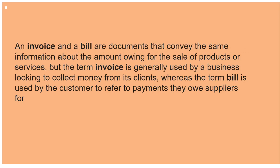Next is invoice and bill. An invoice and a bill are documents that convey the same information about the amount owing for the sale of a product or services. However, the term invoice is generally used by a business looking to collect money from its client, while bill is used by a customer to refer to the payment they owe suppliers. It is prepared by the seller of the goods when selling on credit — it contains name of the buyer, details of goods sold, rate, and amount of sales. The original copy of the sale invoice is sent to the buyer, while the duplicate copy is retained by the seller as evidence.